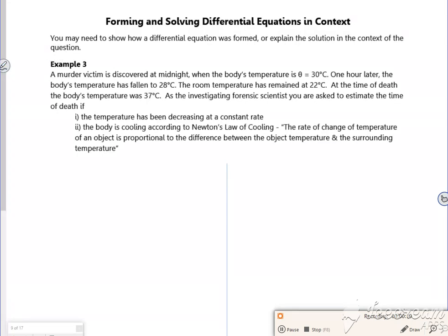It says a murder victim is discovered at midnight when the body's temperature is 30. So if I took midnight to be t=0, I know that θ is 30.